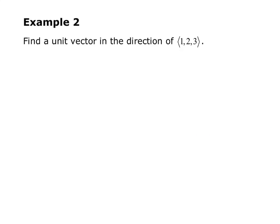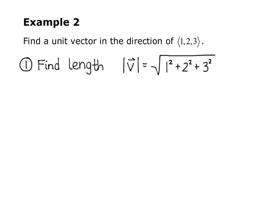Example 2 from the guided notes asks us to find a unit vector in the direction of vector <1, 2, 3>. The first thing we want to do is find the length. The magnitude of V equals the square root of 1 squared plus 2 squared plus 3 squared, which is the square root of 14. So the length of that vector is square root of 14.